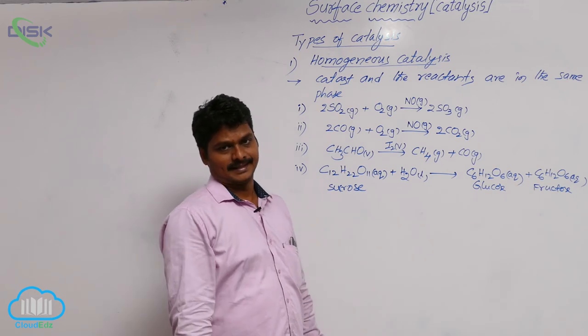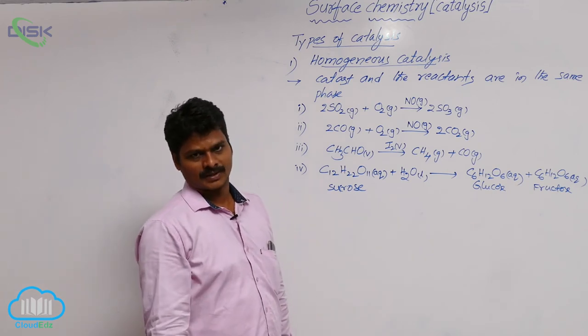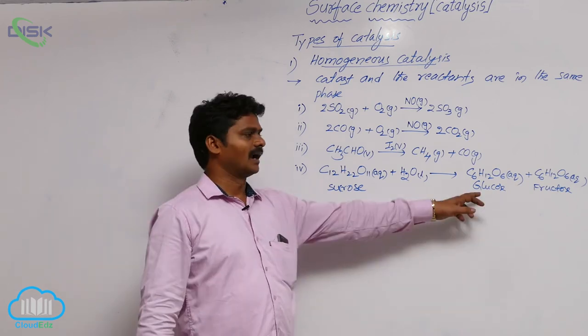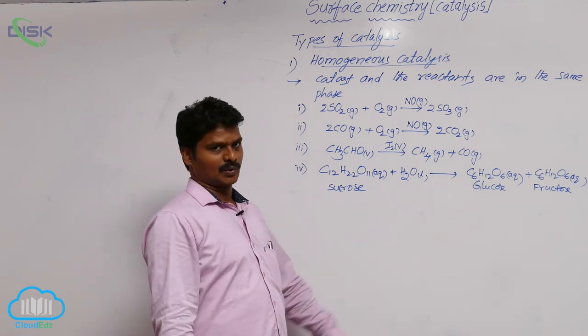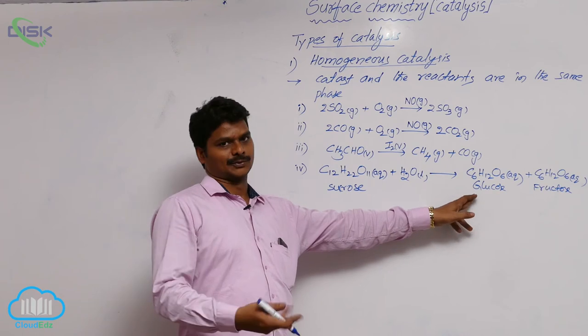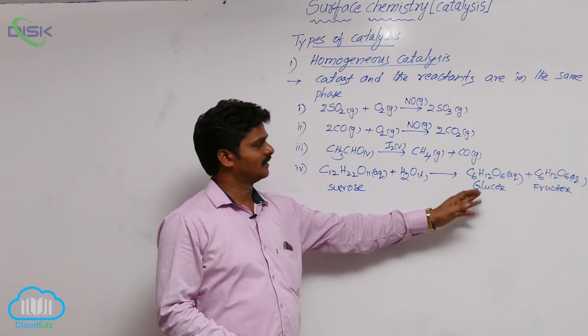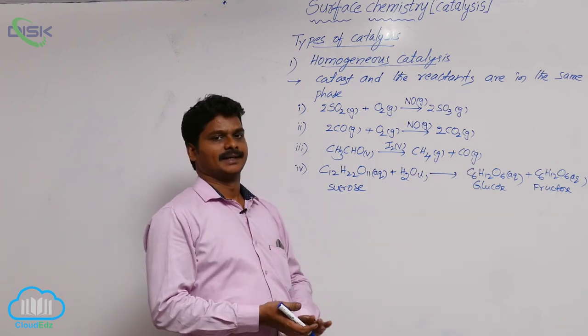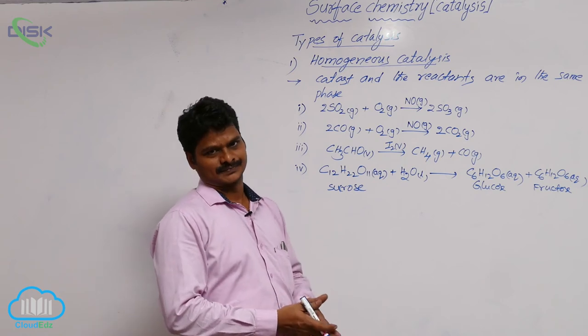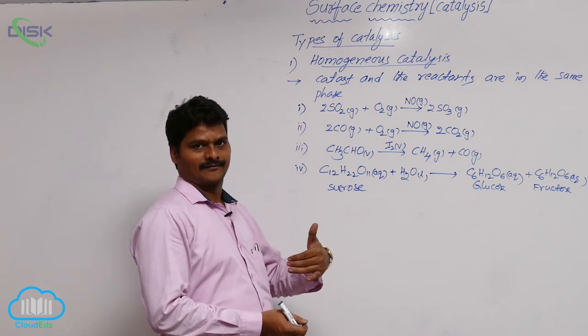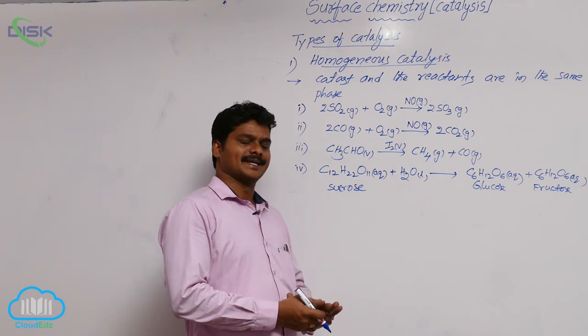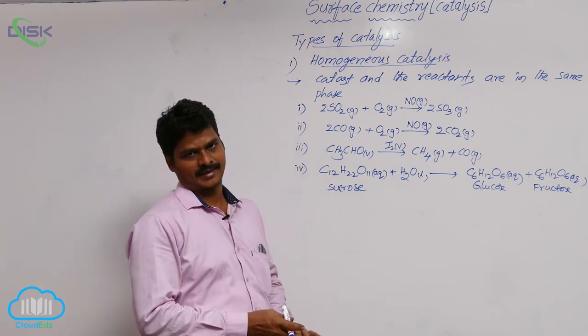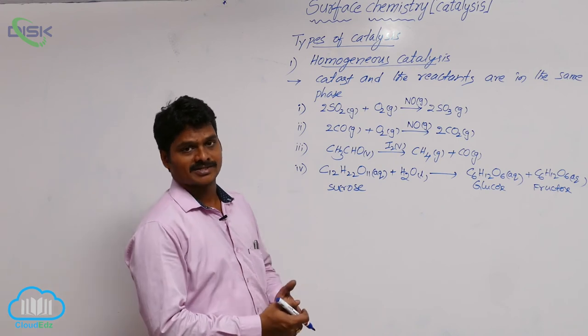Glucose is an aldehyde, whereas fructose is a keto. Glucose is aldohexose, it is a carbohydrate, whereas fructose is ketohexose. So both are functional group isomers. This reaction is called inversion of cane sugar.